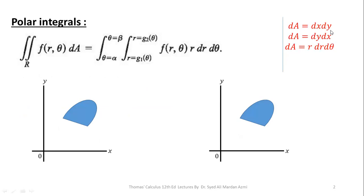Please note that in the Cartesian system, we can use dA as dx dy or dy dx. But in polar coordinates, we will always use dA as r dr d theta. So in order to calculate this integral, we have to replace dA with r dr d theta. Since R is our inner variable, the limits of R may be constant or variable. And since theta is our outer variable, the limits of theta are always in the form of constant numbers.